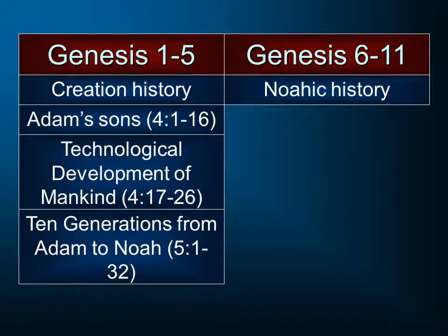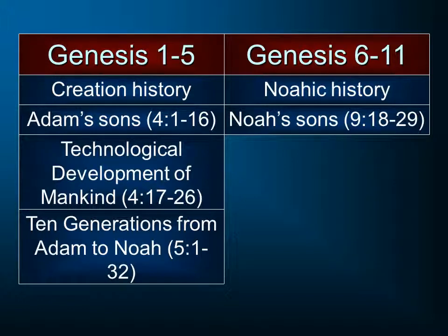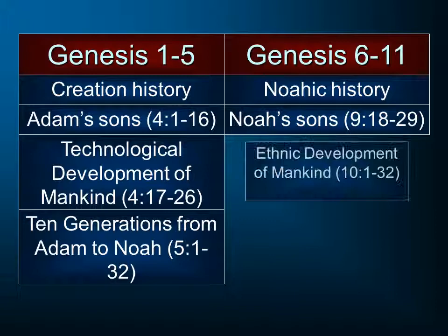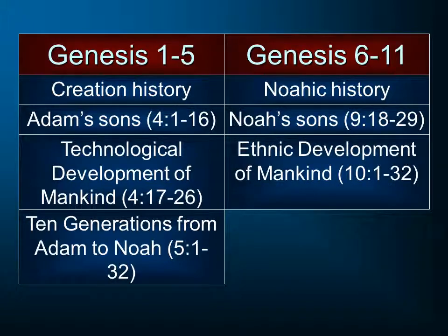Now as we come to Genesis chapters 6 through 11, we're going to see not the creation history, but the history of Noah and his family. We will look at the sons of Noah, set forth in Genesis chapters 9:18 through 29 — his three sons Shem, Ham, and Japheth, and their descendants. We will see not a technological development but rather an ethnic development of mankind as mankind moves out and separates into all of the present nations. There will be 70 nations mentioned in Genesis chapter 10.